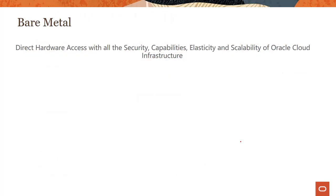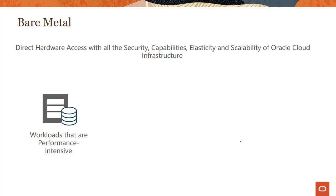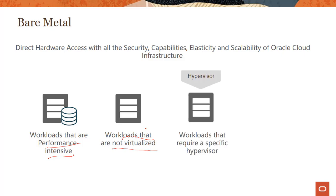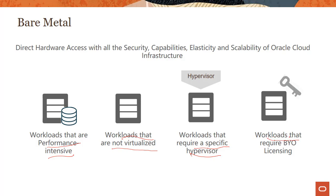What are the use cases for bare metal? Anytime you have the highest security, scalability, or performance requirements, you would use a bare metal machine. This includes performance-intensive apps, workloads which are not virtualized, workloads that require a specific hypervisor where you want to install your own, and cases where you have bring-your-own licensing. These are four predominant use cases, but there are other use cases as well where you would use a bare metal offering.